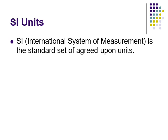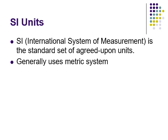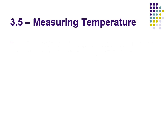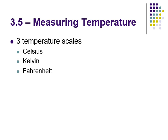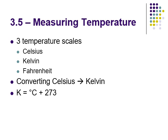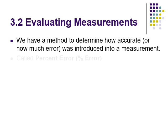Moving on from sig figs, we have a few other topics. SI units — the International System — is a standard set of agreed-upon units that people around the world use; we're essentially using the metric system. For temperature, there are three major scales: Celsius, Kelvin, and Fahrenheit. We won't focus on Fahrenheit. You need to know how to convert between Celsius and Kelvin: Kelvin equals Celsius plus 273, or Celsius equals Kelvin minus 273.